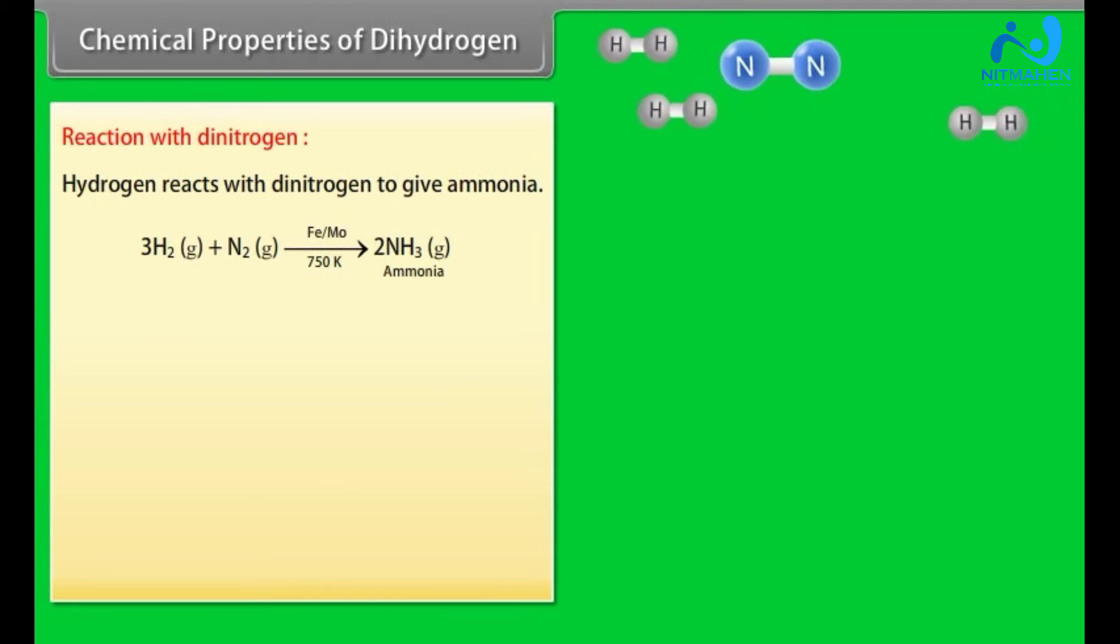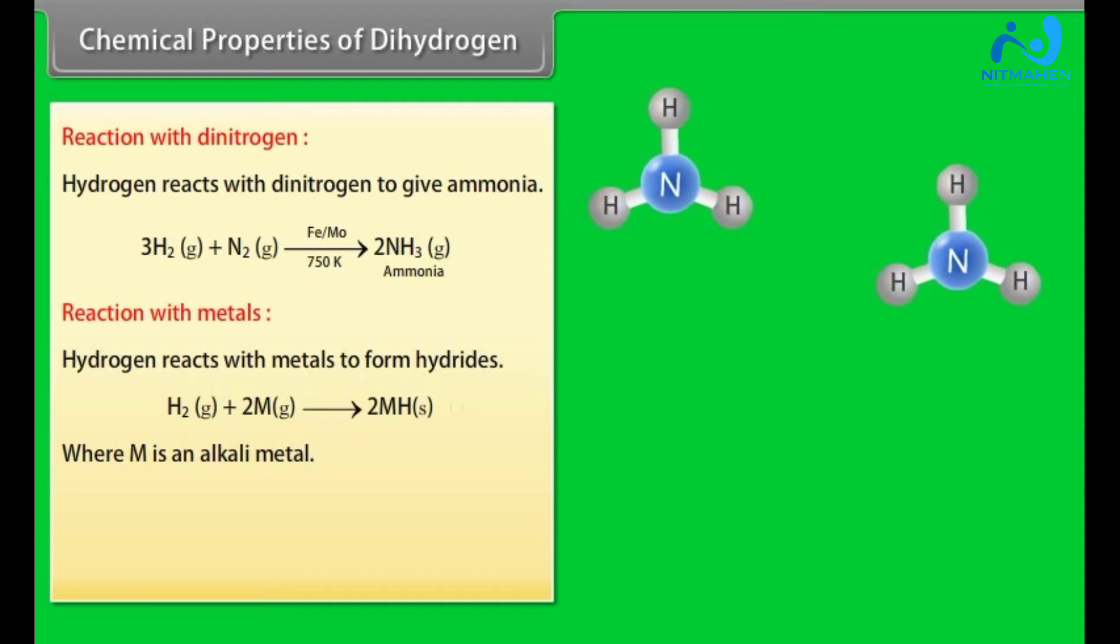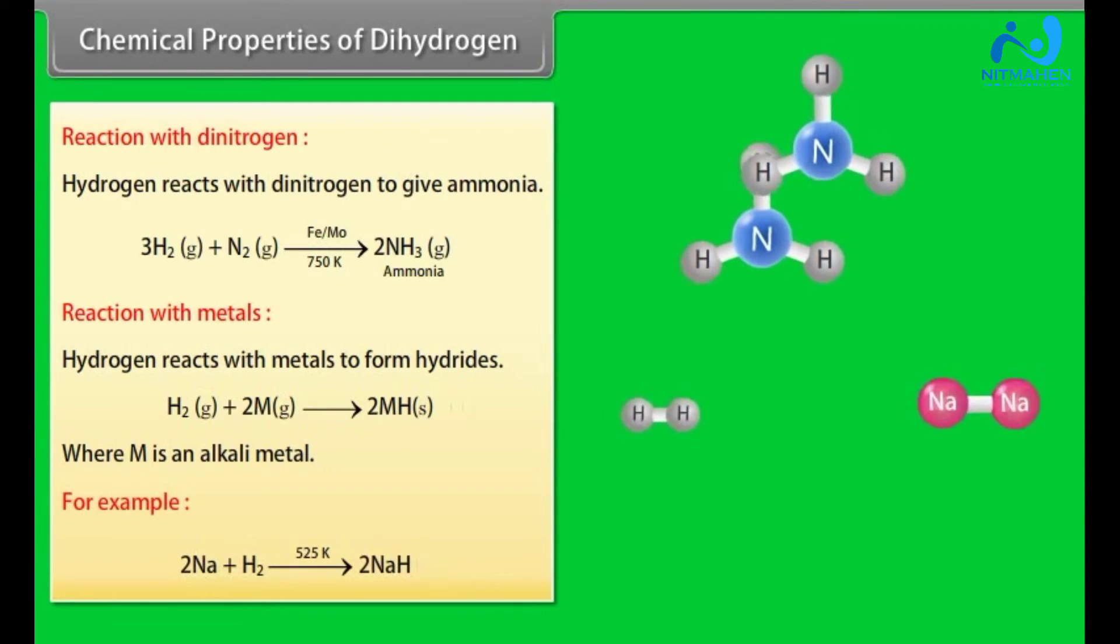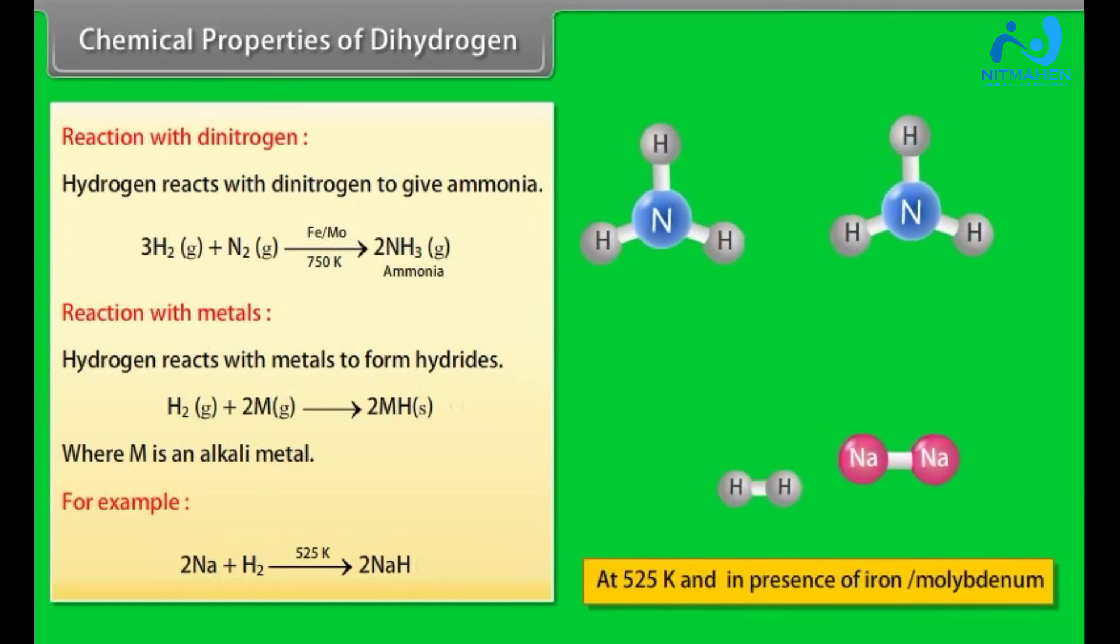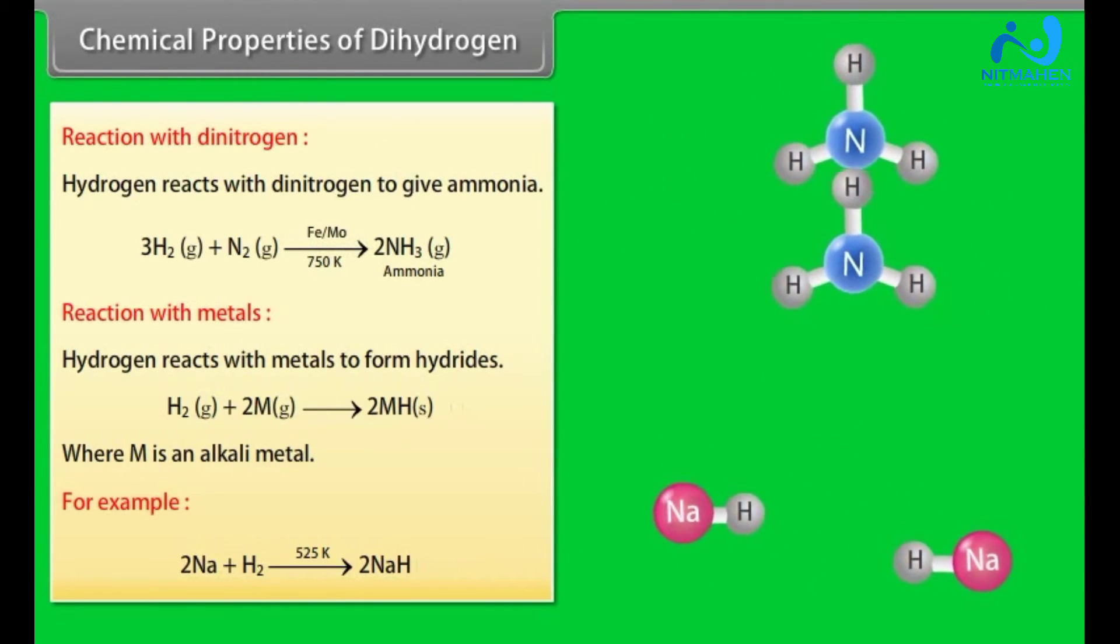Chemical properties of dihydrogen. Reaction with dinitrogen: Hydrogen reacts with dinitrogen to give ammonia. Reaction with metals: Hydrogen reacts with metals to form hydrides, where M is an alkali metal. For example, 2Na plus H2 on temperature 525 Kelvin gives 2NaH.